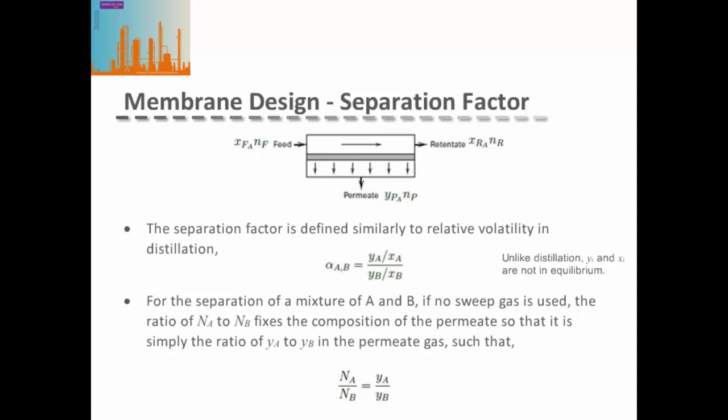If we have no sweep gas in our membrane, then the ratio of the fluxes passing through the membrane defines the composition of the permeate. In this case, the ratio of the fluxes simply gives us the ratio of the concentration of each of our components in the permeate gas.